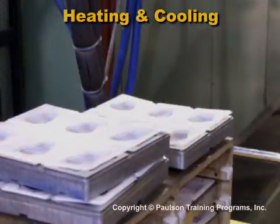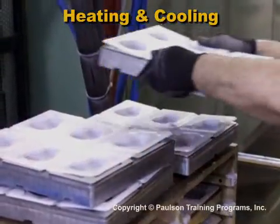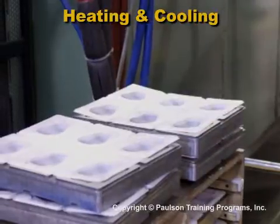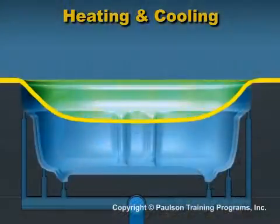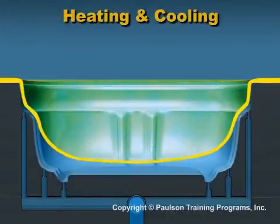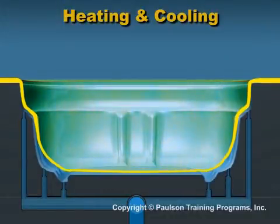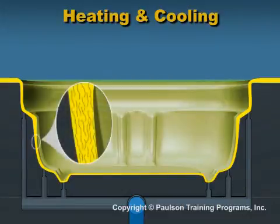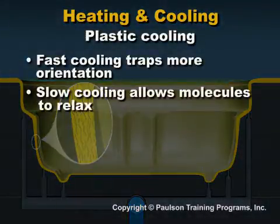That's why thermoformed parts are always smaller than the cavity or core dimensions. The second effect of cooling is that molecules that become oriented may be frozen in place. The percent of oriented molecules that freeze in place depends on how quickly the molecules are cooled. Fast cooling traps more orientation; slow cooling allows them to relax.